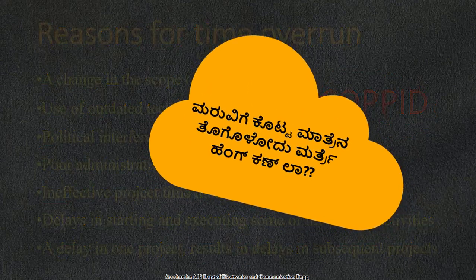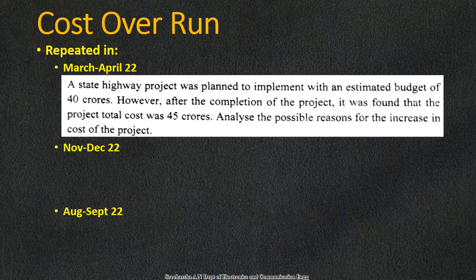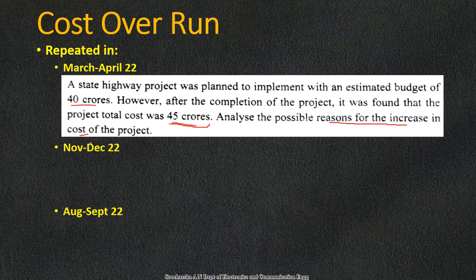The next most repeated question along with time overrun is cost overrun, also repeated in these three question papers. In March/April 2022: 'A state highway project was planned with an estimated budget of 40 crores. However, after completion, the total project cost was 45 crores. Analyze the possible reasons for the increase in cost.' Cost overrun is simply an increase in project cost, just as time overrun is an increase in time duration beyond what was planned.